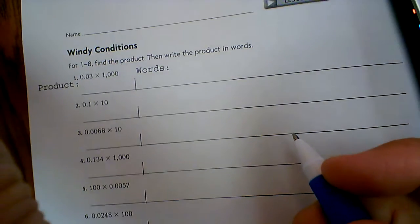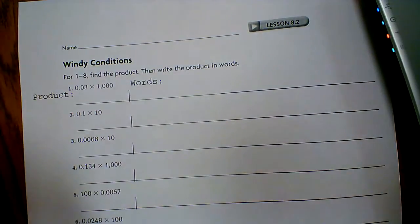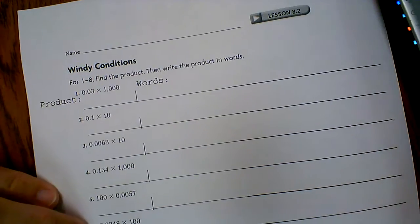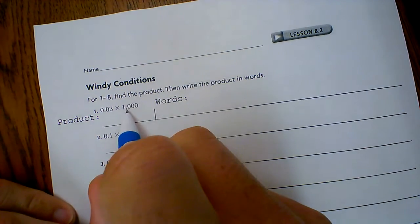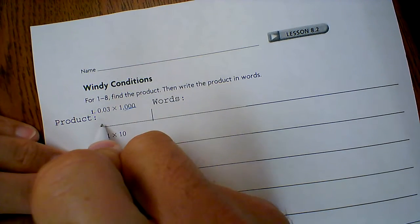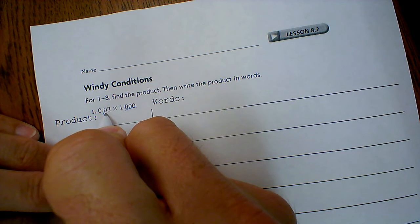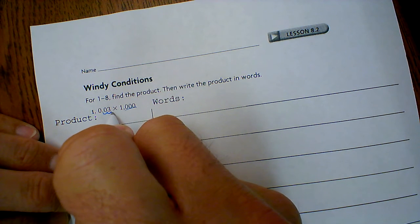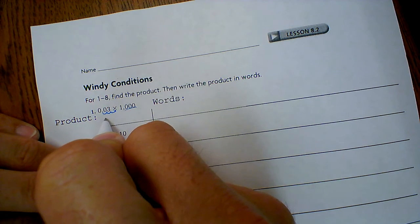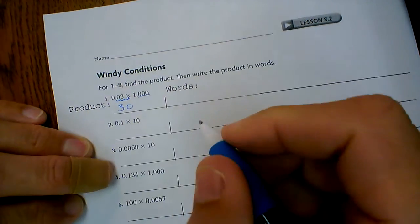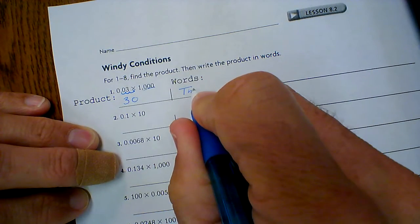Alright ladies and gentlemen, let's check your work to make sure you did it correctly. First and foremost, I've got three zeros, so that means I need to move my decimal point three times: one, two, three. Fill that in with a zero and I get 30, and it works.